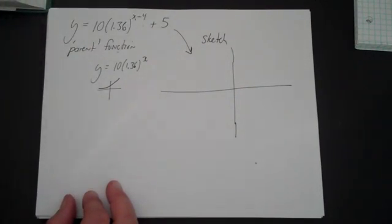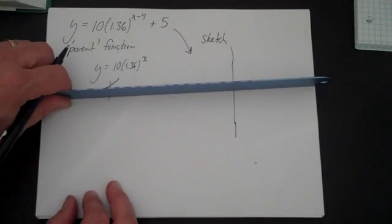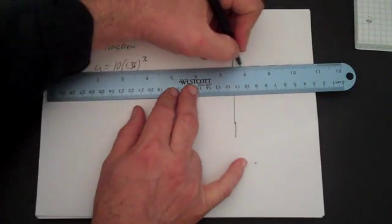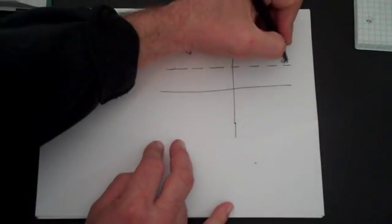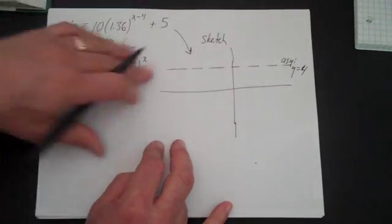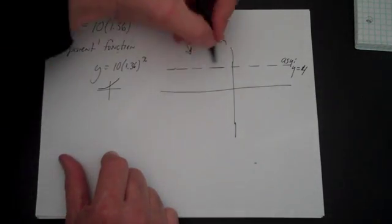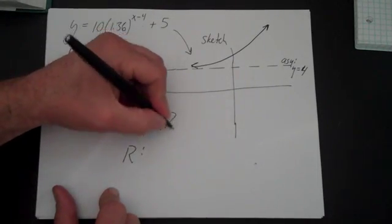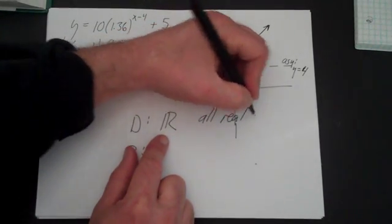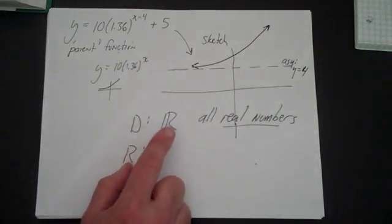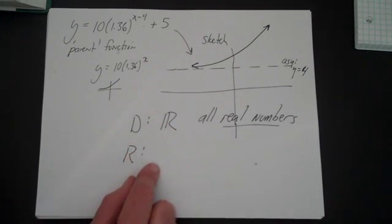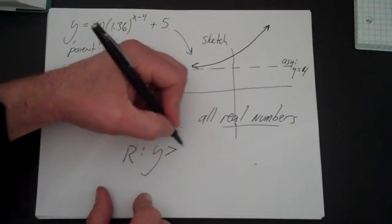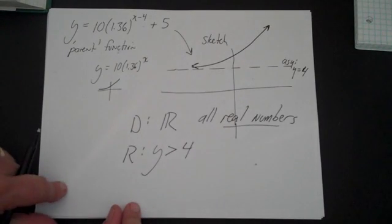The asymptote is unaffected by the horizontal shift of 4, since moving a horizontal asymptote left or right doesn't change it. Only the vertical shift matters. So the new asymptote is y = 5. The domain is all real numbers, and the range is y greater than 5 — not equal to, because it's an asymptote. That's the domain and range of this function.